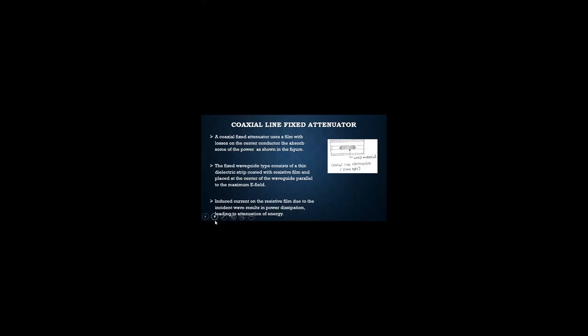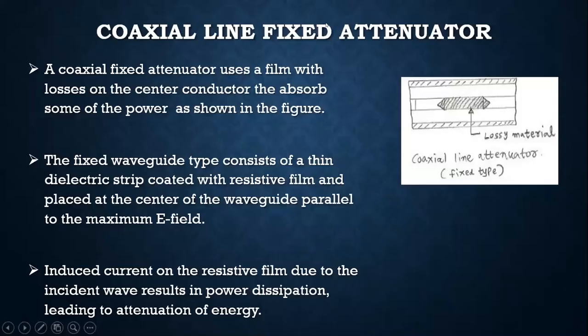Next is the fixed waveguide type. It consists of a thin dielectric strip coated with a resistive film and fixed at the center of the waveguide, parallel to the maximum electric field. Induced current on the resistive film due to the incident wave results in power dissipation, leading to attenuation of energy.